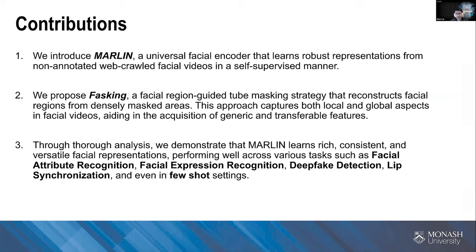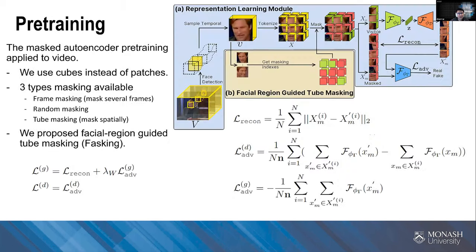The main contributions are: introducing MARLIN as a good facial encoder trained in a self-supervised manner; introducing the novel facial region guided masking strategy; and demonstrating generalization performance across several downstream tasks including few-shot settings. For pre-training, we first track the facial region using a pre-trained facial detector from in-the-wild video, then randomly sample 16-frame clips. The ViT architecture patches the input into 2×16×16 cubes following previous works.